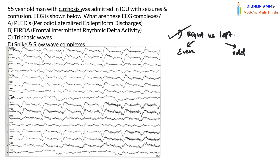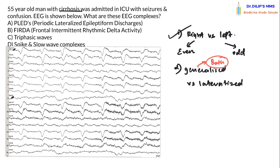The second thing to note in an EEG is whether the discharges you see are generalized or lateralized. A generalized discharge is present in both hemispheres and almost all leads. A lateralized discharge is focal — either restricted to a single hemisphere or to a particular area within a hemisphere.